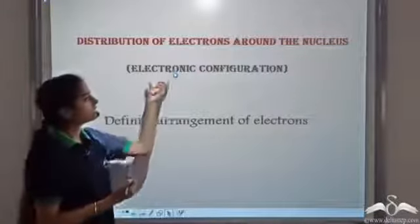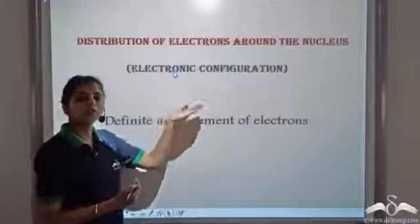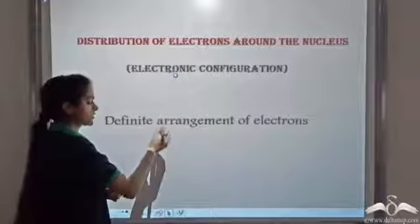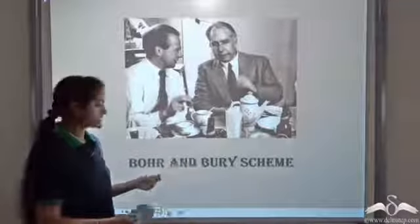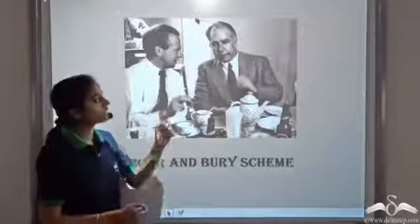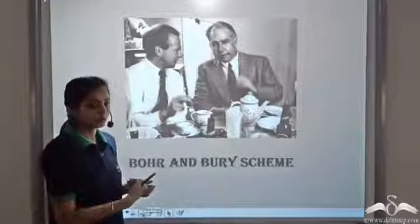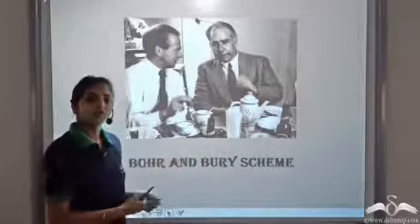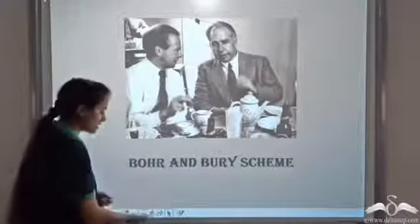To get the electronic configuration, it follows a certain set of rules. These rules were given by two scientists, Bohr and Berry, and are known as the Bohr and Berry scheme. Let's see what this scheme says.